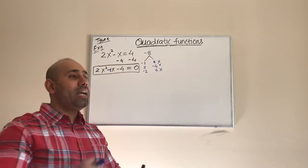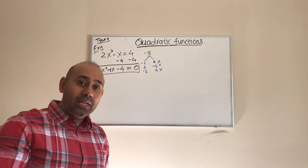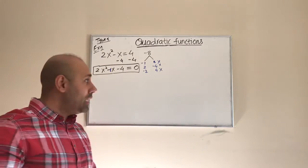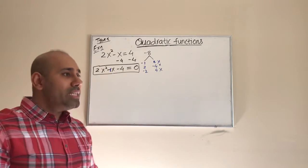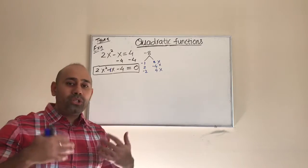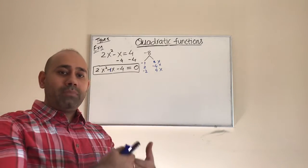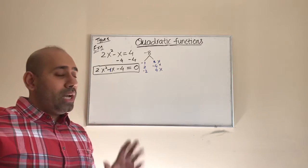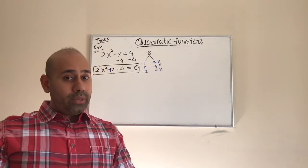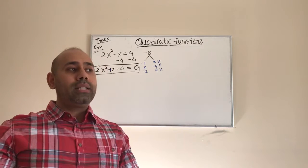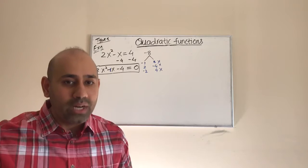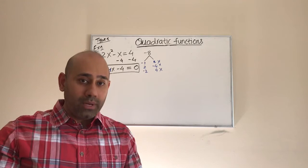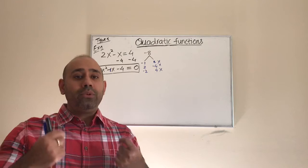Since we cannot factor this polynomial, we are stuck. We need to figure out if there are other formulas or techniques for solving this quadratic function. There is a method — a nice formula — that helps us solve equations we cannot factor. I wanted to start with this example to show you why one would use something different. Please still try to learn factoring well and use it when it works, but if factoring does not work, then we have to use this formula.